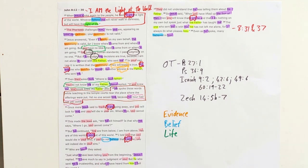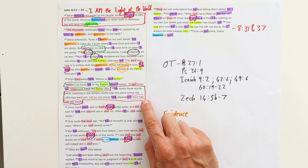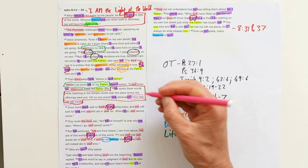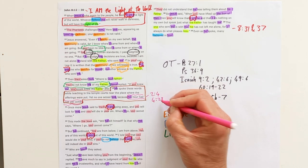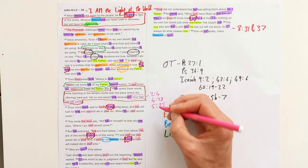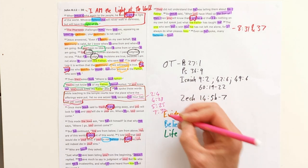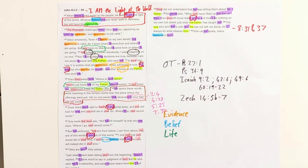Jesus's hour in John's gospel is the time of his crucifixion. He spoke about his hour not coming already in John 2 verse 4, in John 4 verse 23, 5 verse 25, 7 verse 30. Jesus's hour was still to come.